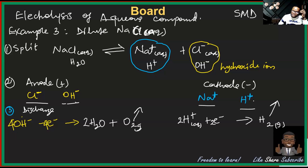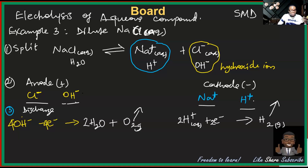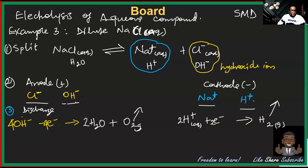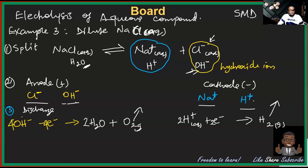Dilute simply means you have a higher probability of hydroxide being chosen, like having nine white balls and one black ball in a basket — the white ball is more likely to be chosen. Dilute means more water, more hydroxide than chloride, so hydroxide has home advantage and is favored for discharge.